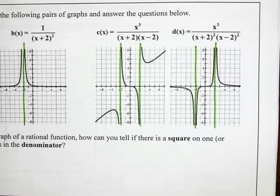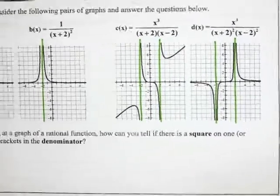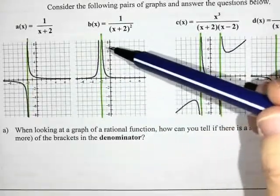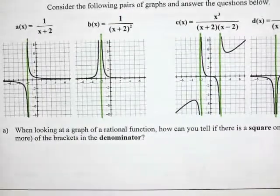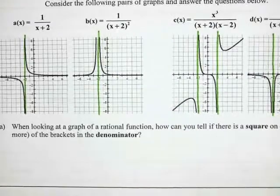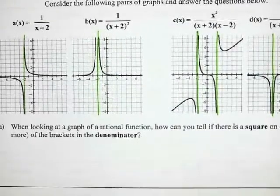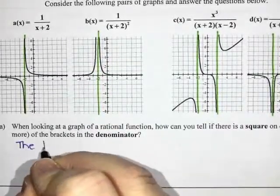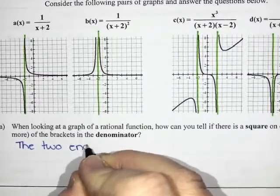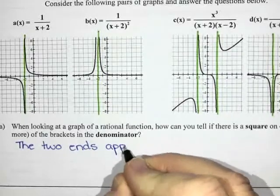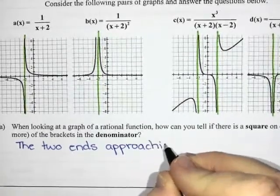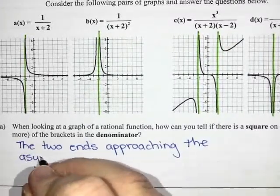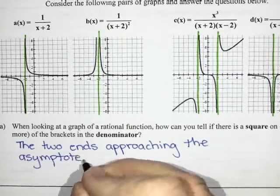So I don't know that I could predict what direction they're going to go in, but I did notice that when there was a square, both ends of the graph on either side of the asymptote are going in the same direction. So how could I tell if there's a square on one of the brackets? The two ends that are approaching the asymptote will be going in the same direction. The two ends approaching the asymptote are going in the same direction.